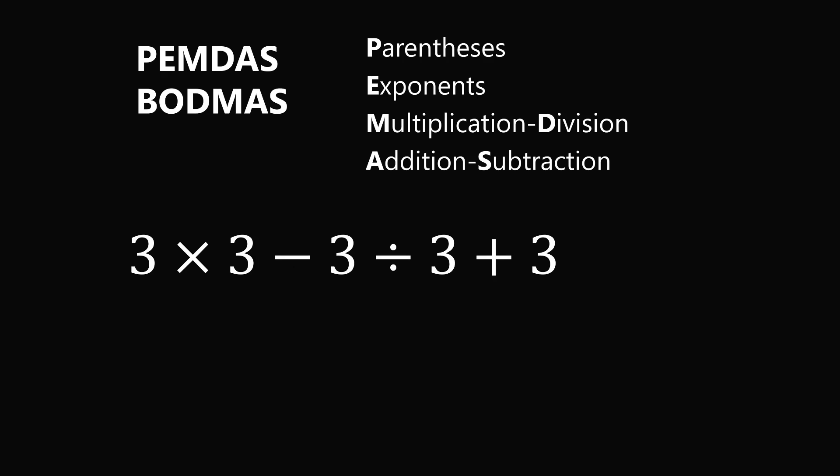Some people may have learned it as BODMAS, where parentheses has the corresponding brackets, and exponents has the corresponding orders. An important clarifying rule is that if you have two operations of the same precedence, you want to evaluate them from left to right.